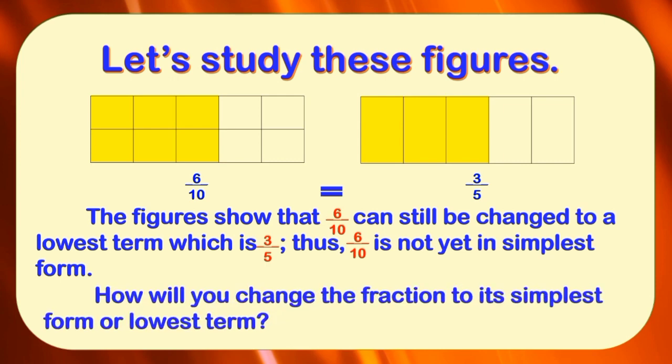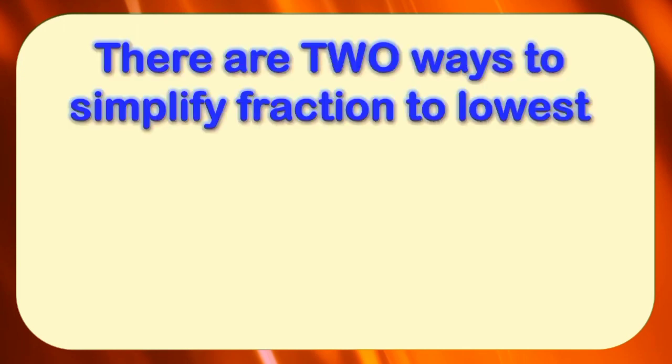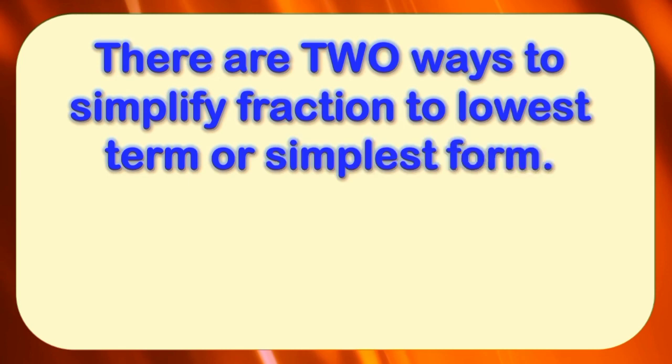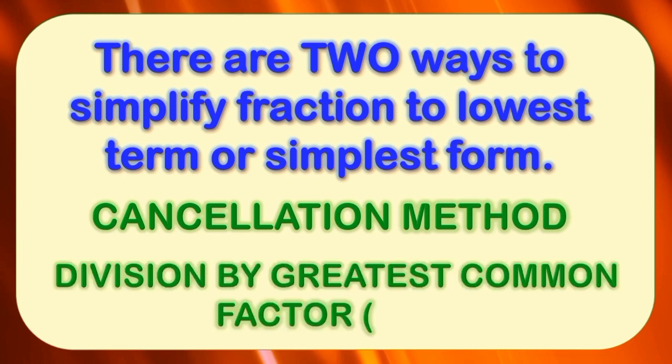It leads us into a question: How will you change the fraction to its simplest form or lowest term? To answer our question, there are two ways to simplify a fraction to lowest term or simplest form. They are the cancellation method and division by greatest common factor, or GCF. Let us use the first way — the cancellation method.